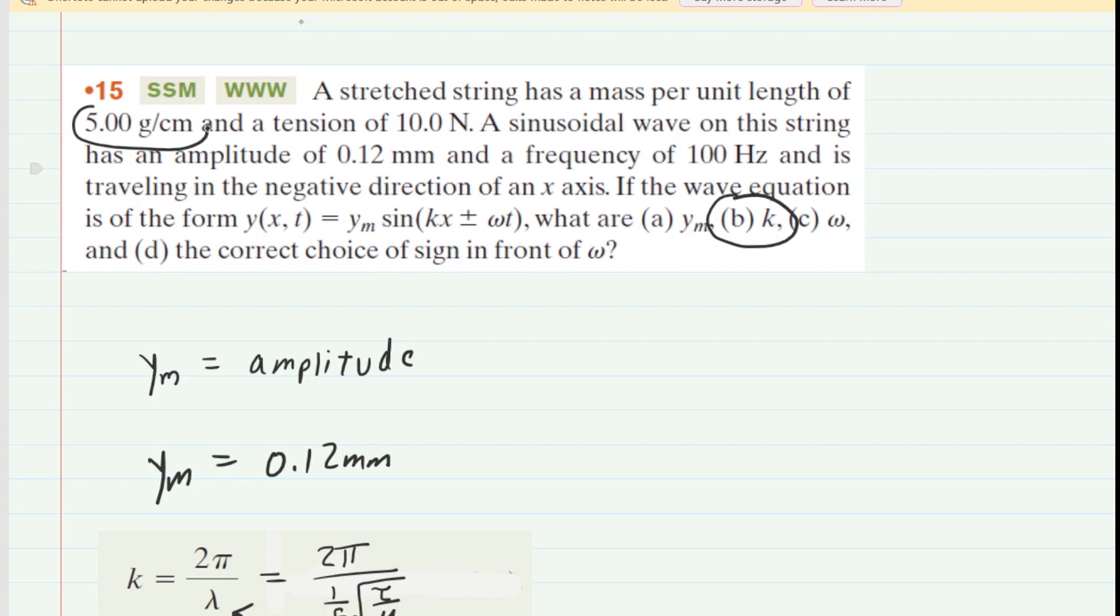We have the mass per unit length, which we're going to have to convert into kilograms per meter. We'll do that momentarily. We have the frequency of 100 hertz, and then we have the tension of 10 newtons. Why don't we take that mass per unit length and convert that into kilograms per meter?